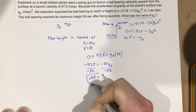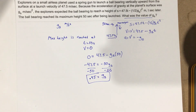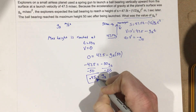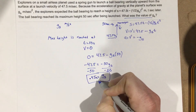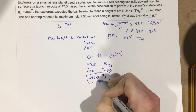So our gravity on the planet — the acceleration of gravity — is 0.95 meters per second squared.